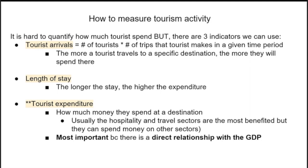How do we measure tourism activity? It's hard to quantify exactly how much a tourist spends, but we use a few indicators. First, tourist arrivals — the number of tourists multiplied by the trips made in a given time period. Then length of stay — the longer the stay, the higher the expenditure. Simply put, the more nights you spend, the more money you spend.